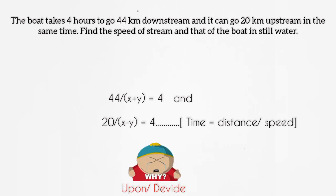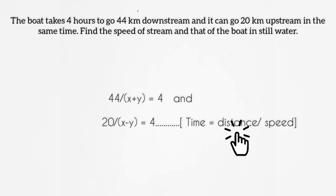Why we had taken upon? Because the formula for time is distance upon speed. Distance is 44 kilometer and speed is x plus y. For second condition we can write 20 upon x minus y is equal to 4 by using the time distance formula.